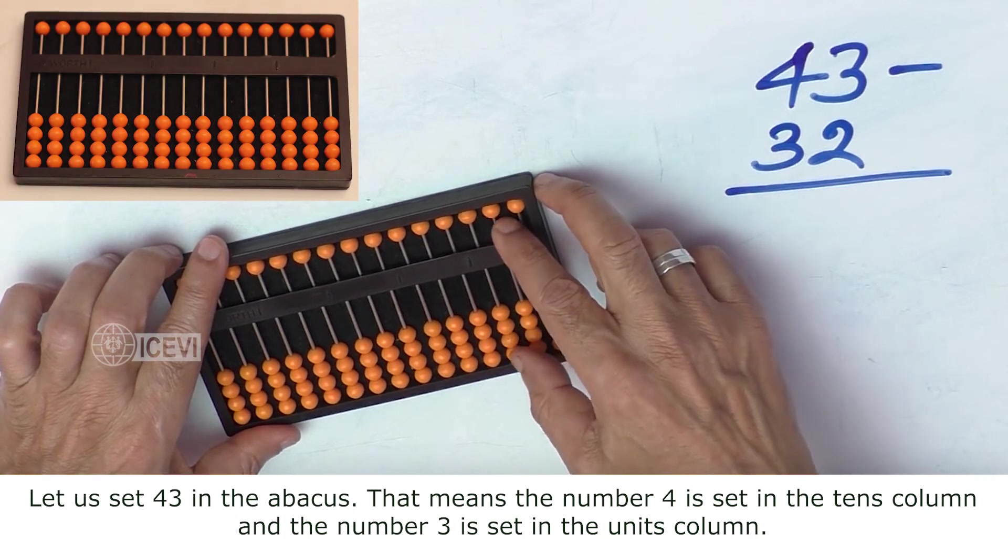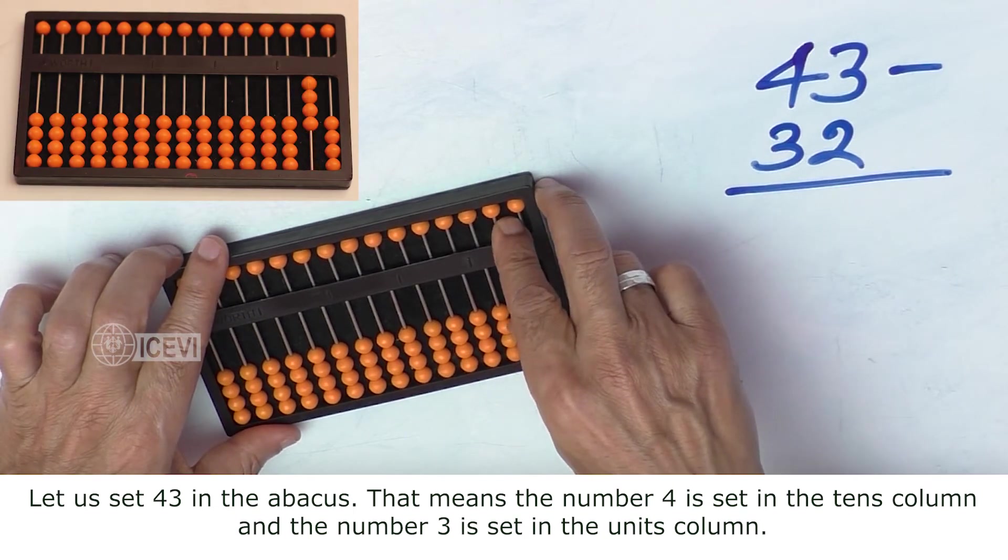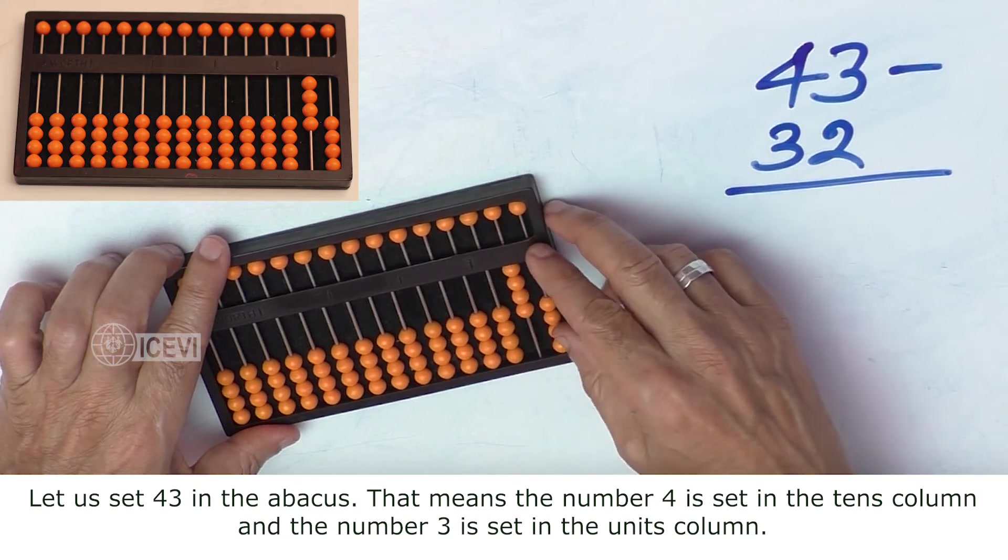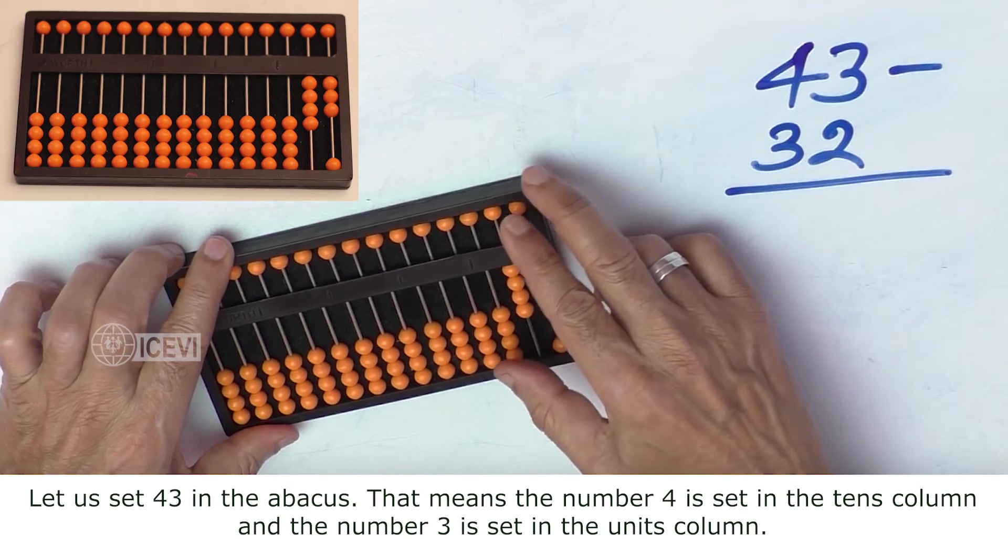That means the number 4 is set in the tens column and the number 3 is set in the units column.